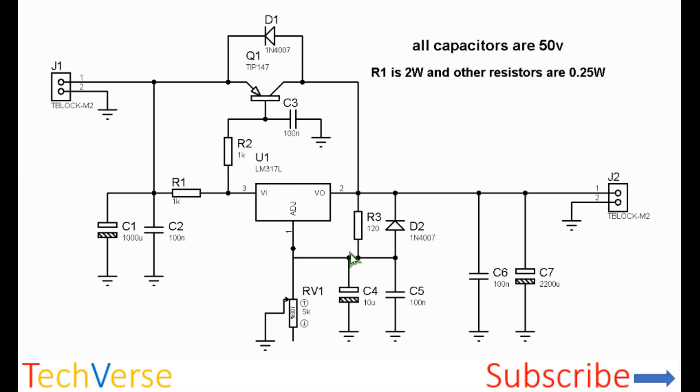The output is completely adjustable from about 1.2 to 35 volts by changing the position of the potentiometer RV1.